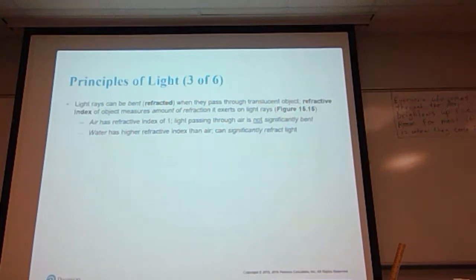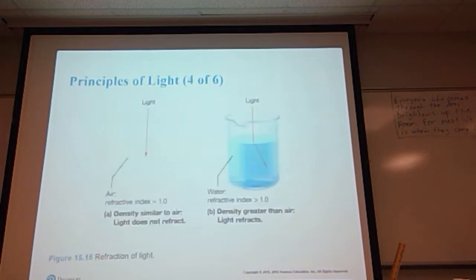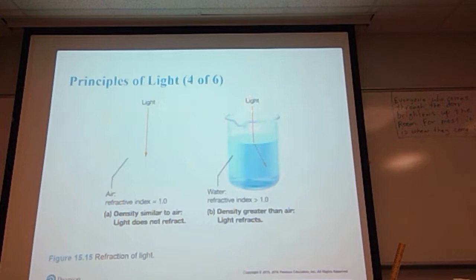The refractive index of an object measures the amount of refraction it exerts on light rays. Air has a refractive index of one, meaning light passing through air is not significantly bent. Water has a higher refractive index than air and can very significantly refract light. Teachers used to demonstrate this by taking a large beaker of water and sticking a pencil in it — when you look at it from the side, the pencil looks broken because the light is being refracted.